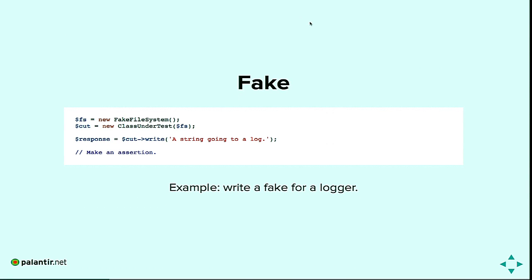A fake is very similar to a dummy except the fake actually has logic. Let's say we have a fake file system and our class under test — maybe a logger — uses the file system. The fake file system, whenever you write to disk, just returns true — a success value. We're not using the real class; we've implemented our own concrete class called fake file system that gives us the same behavior.